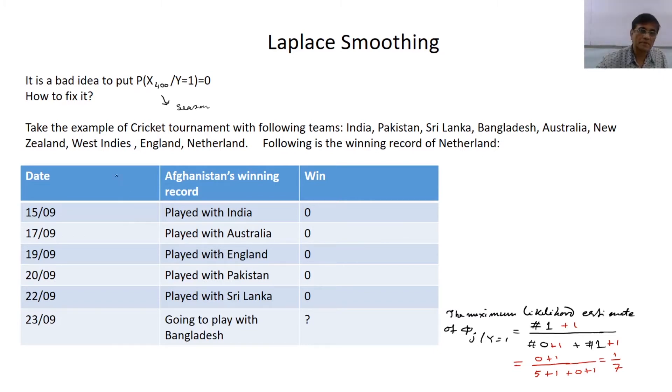I will take an example, taking a digression. Suppose there is a cricket tournament going on, and all the countries India, Pakistan, Sri Lanka, Bangladesh, Australia, New Zealand, West Indies, England, Netherlands are playing the tournament. Netherlands is a newcomer in cricket. So following is the winning record of Netherlands.